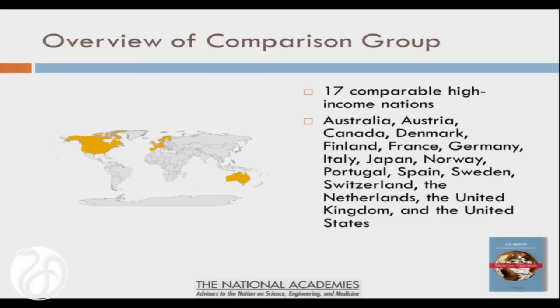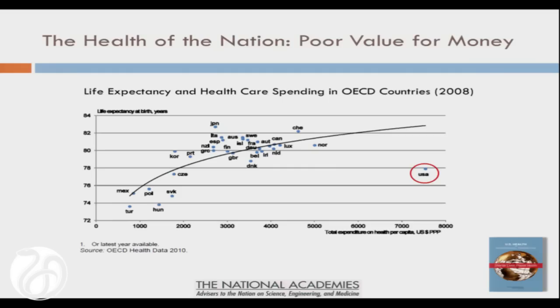This is a report sponsored by the Institute of Medicine and the National Research Council to look at how the health of the American population compares with a set of peer countries — also high-income countries shown on the map — and it's been well known for some years that we don't do as well as other countries.